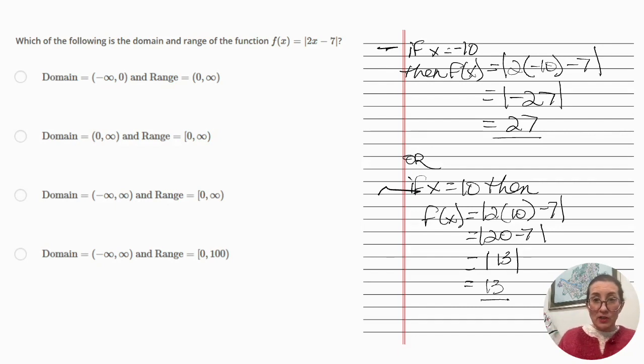Therefore, the domain of this function is minus infinity to plus infinity. In terms of the output, because the answer is always the absolute value and therefore positive, the answer can only be zero or above. Therefore, the range of the function is zero to positive infinity. And there you go.